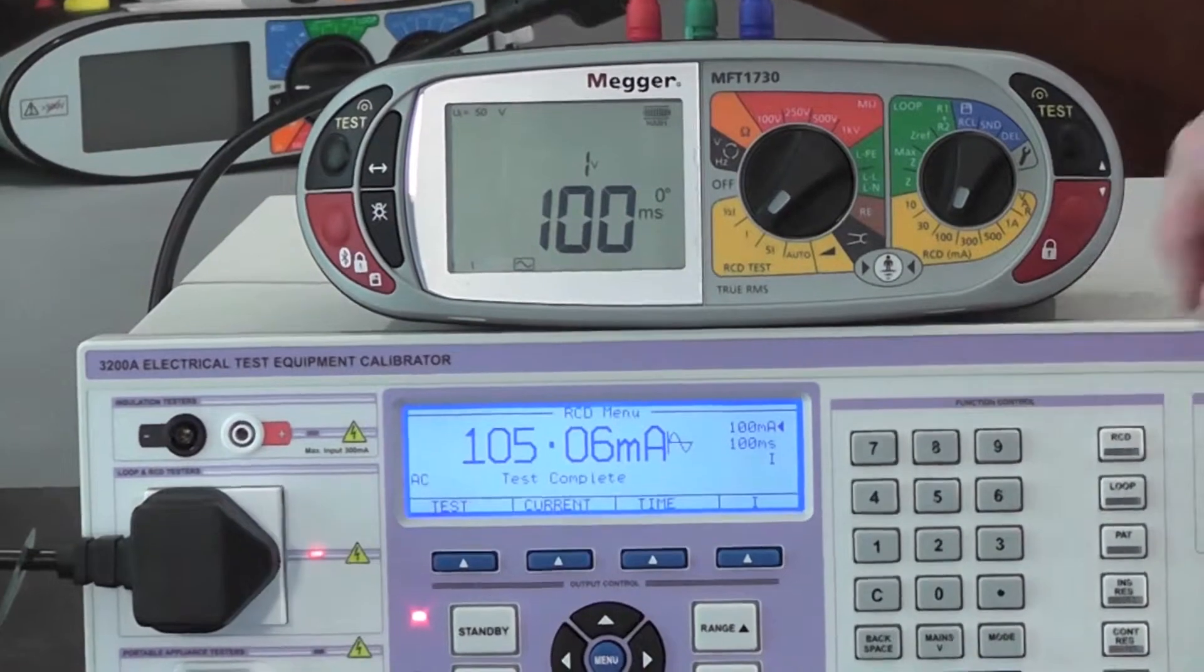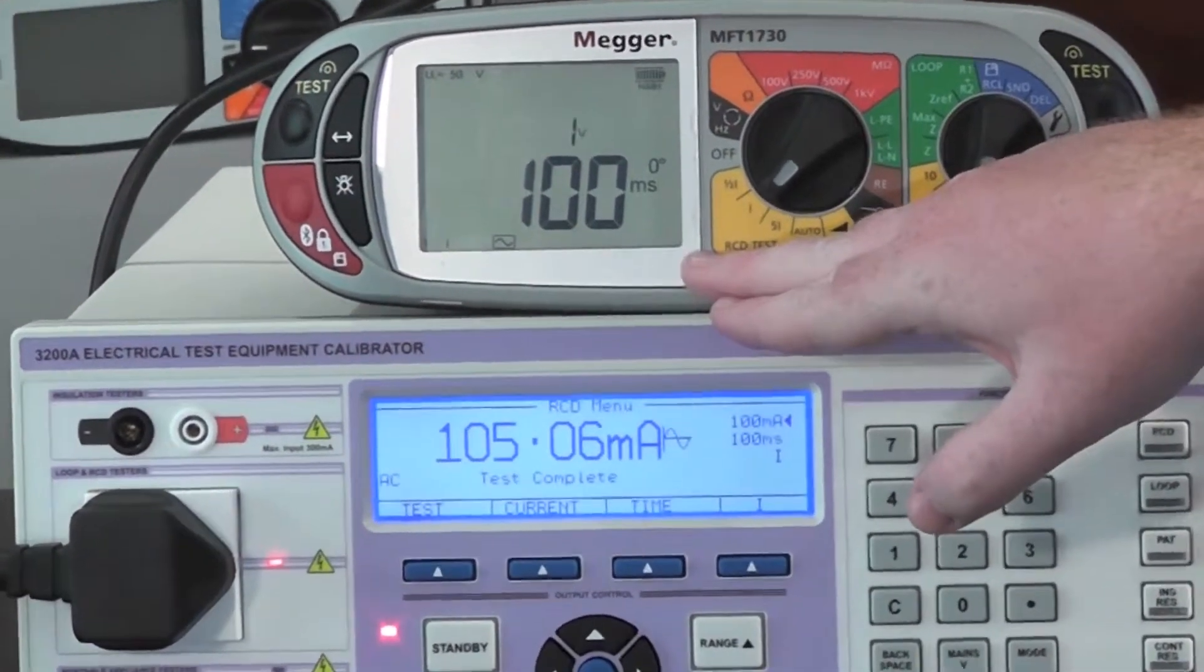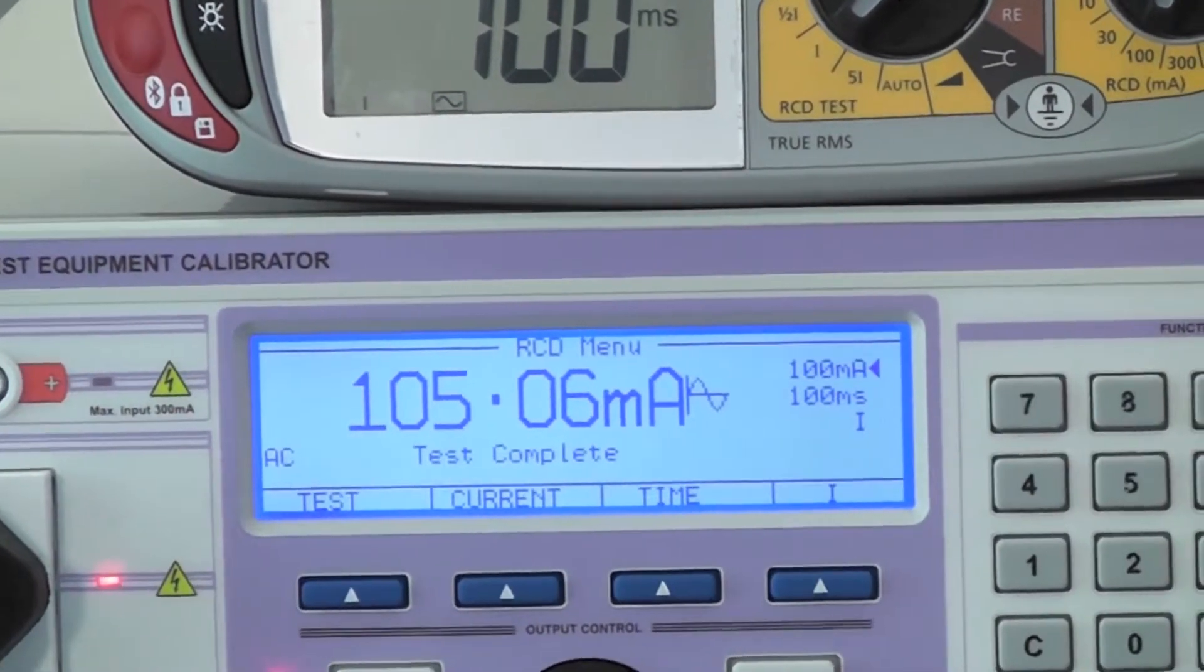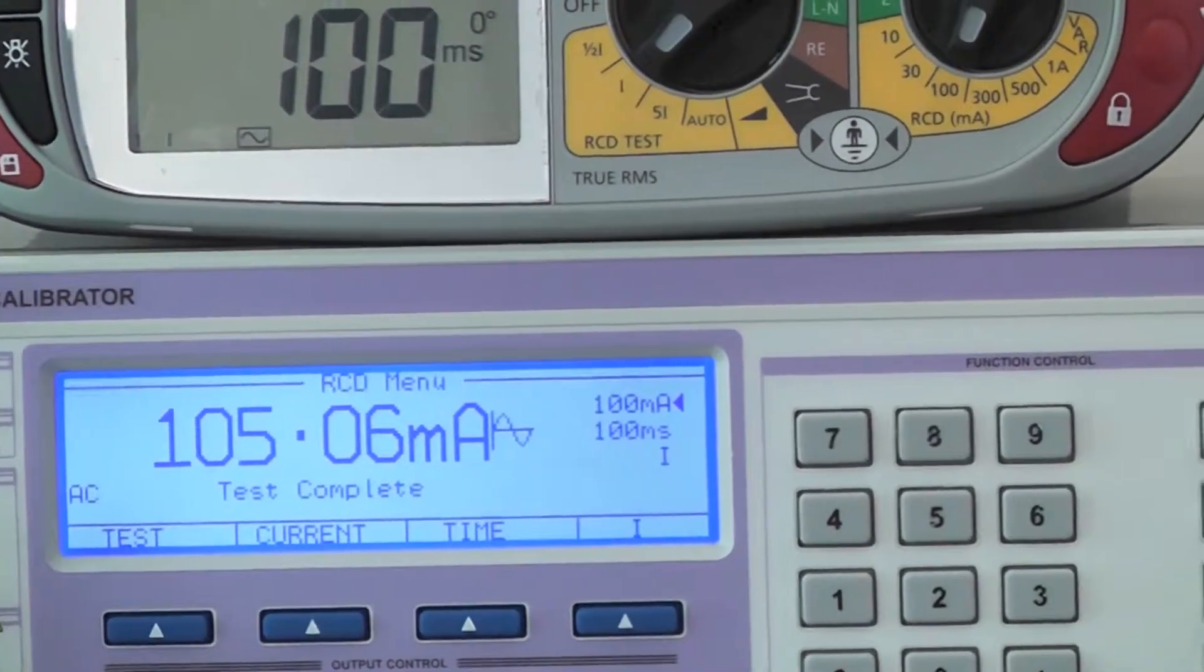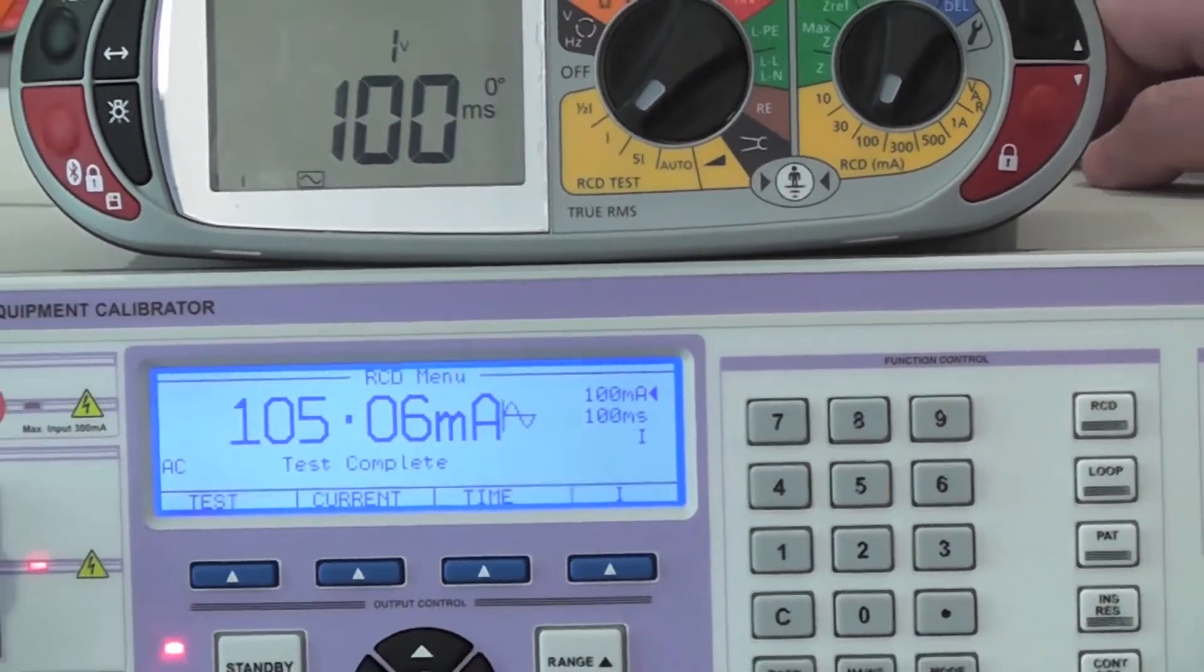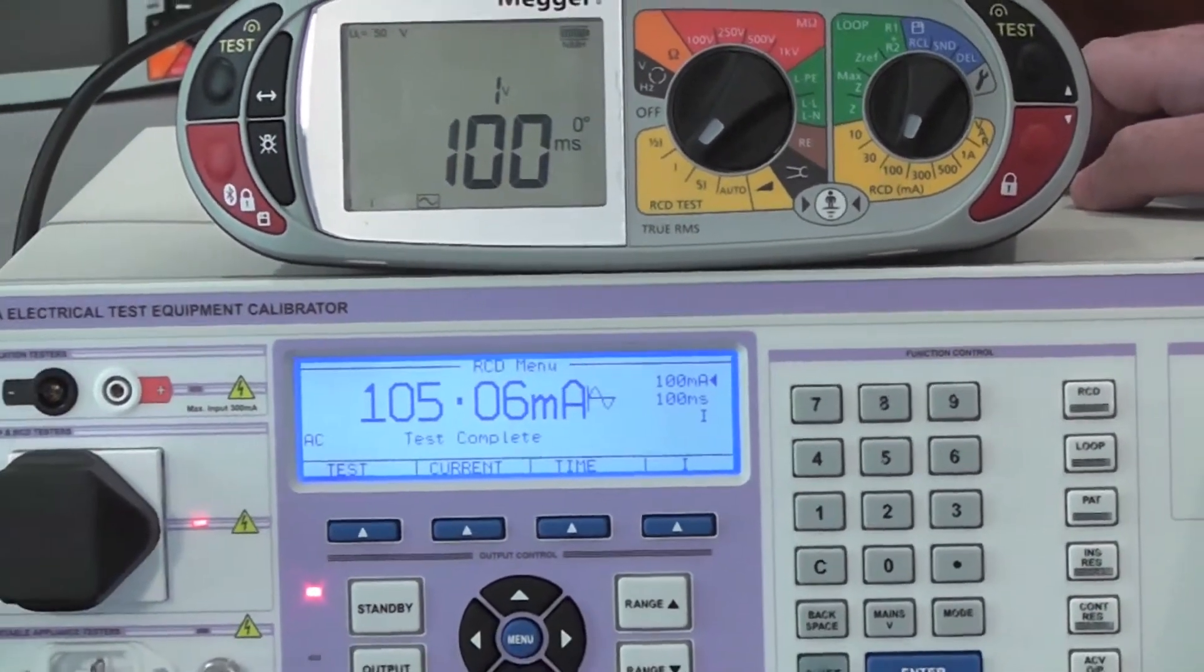You can then compare the timing indicated on the RCD tester against the time chosen and verify the current drawn by the RCD tester. Due to the unique design of the 3200A, RCD testers can be tested on protected supplies.